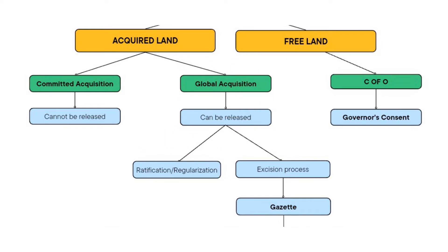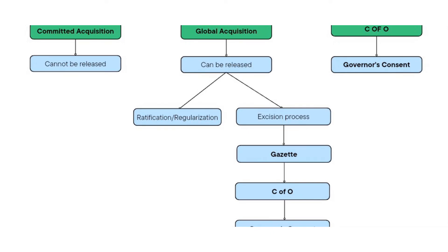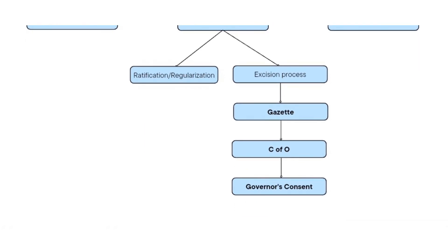There is also another process called excision. Excision is when you buy a land that is under government global acquisition and then apply for the land to be cut out or released for your personal, public, or private use. Once the government approves this and grants you excision — cutting out that parcel of land for your use — it will now be gazetted, meaning it will be written in the government's official land record called a Gazette. Both excision and gazette are very good titles and there is no problem with buying a land carrying either of these titles.